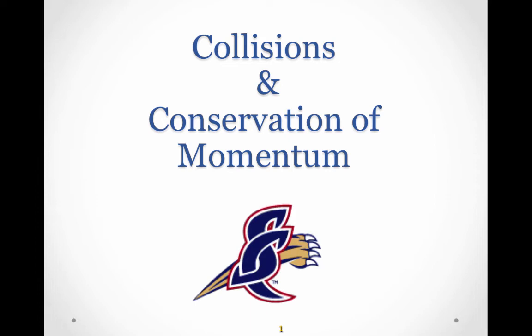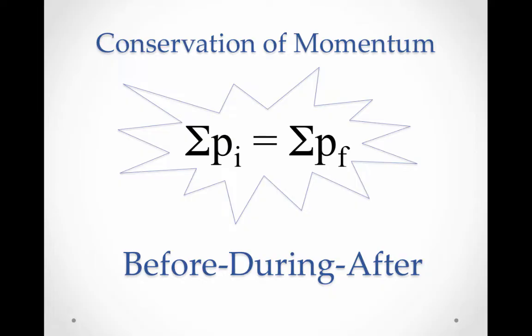Collisions and Conservation of Momentum. We've already learned a little bit about conservation of momentum — that if we take the sum of the momenta initially in our system before any interaction, and then take the sum of the momenta after the interaction, they should be equal. We don't have to know anything about what happened during the interaction. Now we want to look at conservation of momentum with specific examples: collisions.